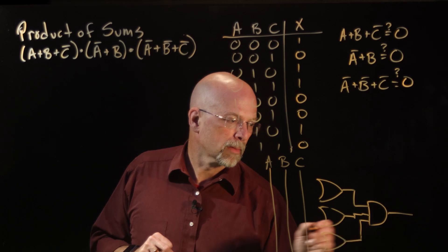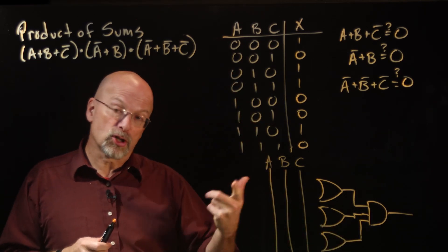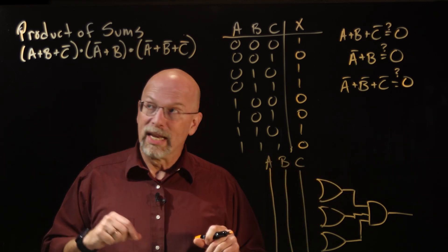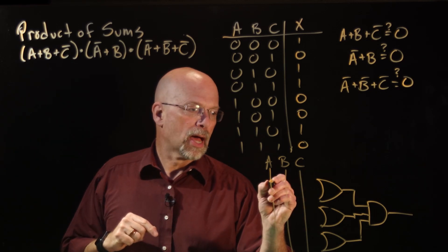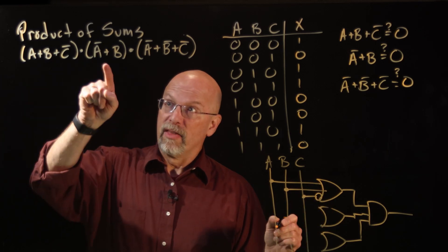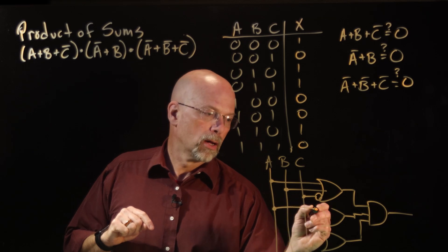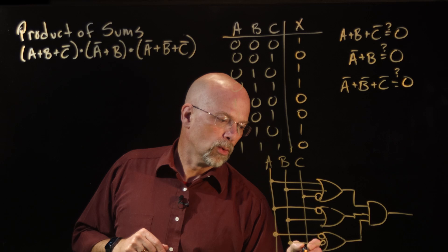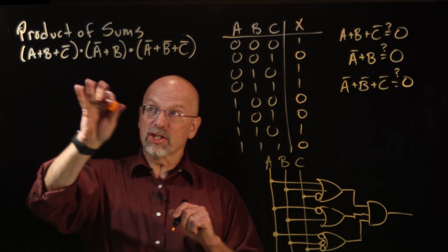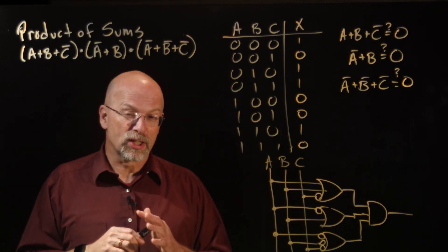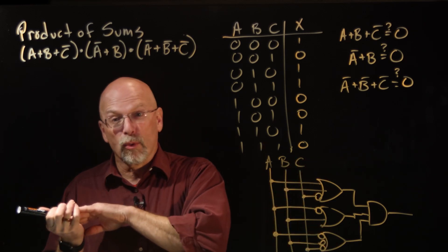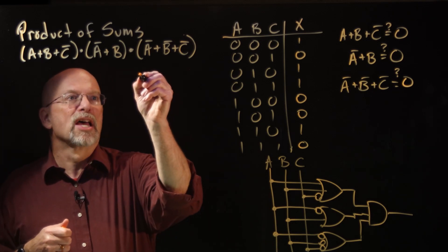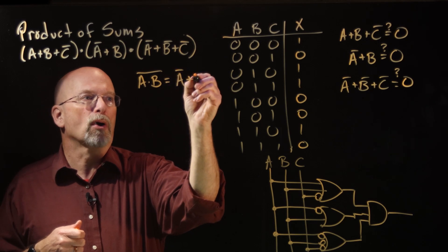Now, what about the inputs? Just like the sum of products circuit, we tap off these wires where we need them and pass them through an inverter before going into the OR gate when needed. So we've got A or B or C̄ for the first OR gate, Ā or B for the second OR gate. And then we also talked about DeMorgan's theorem, giving us the idea — like in the sum of products expression — how we can replace gates with NAND gates. We do the same thing here. DeMorgan's theorem says that (A AND B)̄ is the same thing as Ā or B̄.